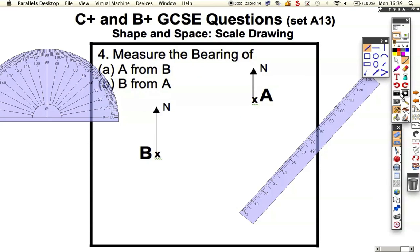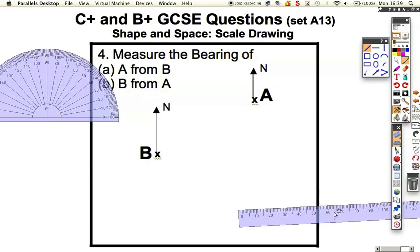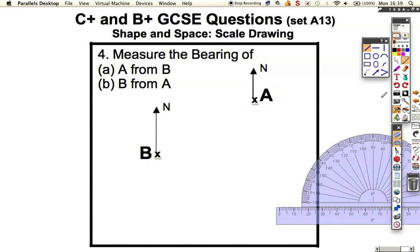Question four. This time it says measure the bearing of A from B and B from A. There's a few things we need to remember about bearings. Let's just note those down. First thing, bearings always start from north. The second thing is they always go clockwise. And the third thing is they're always three digits. For example, 60 degrees becomes 060 degrees. They've drawn the north lines on for us first.